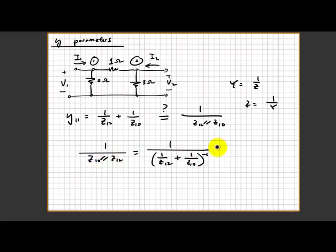You can write it this way or you can write it this way, they all mean the same thing: z12 times z10 over z12 plus z10. These three forms actually mean the same thing.